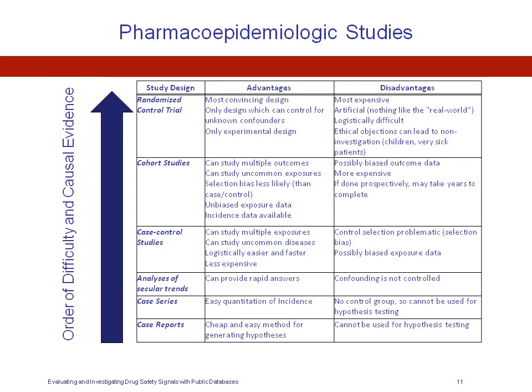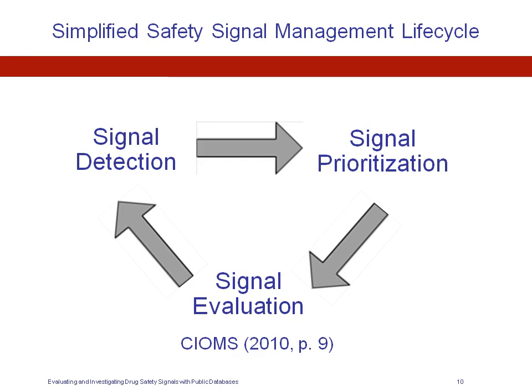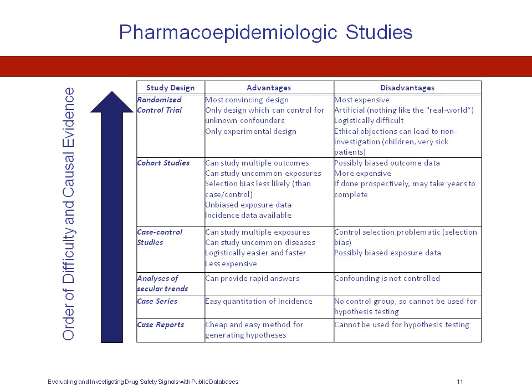For today's discussion, we are really focusing on the signal evaluation step within the signal management lifecycle. It is within this step that we may choose to use pharmacoepidemiologic study design to confirm or refute various signals that have been identified. This small table is ordered by difficulty of execution and increasing strength of causal evidence from the bottom to the top, showing the various types of study design — some observational, some experimental.